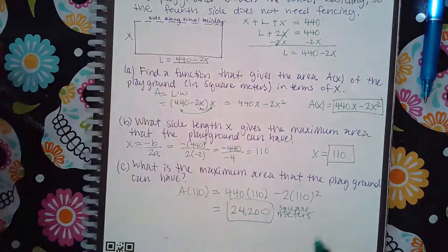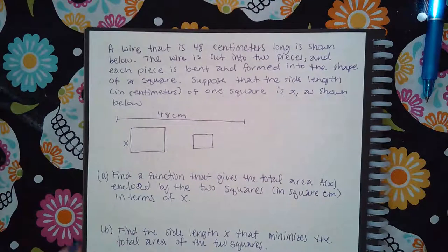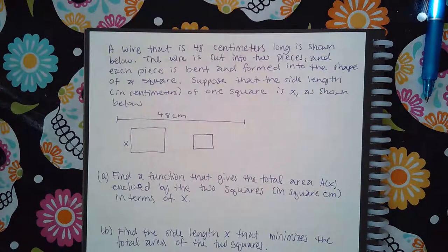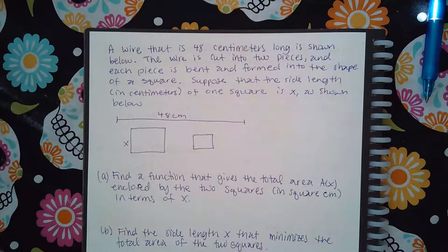The last example is different. A wire that is 48 centimeters long is cut into two pieces, and each piece is bent into the shape of a square. Suppose the side length of one square is x. Find a function that gives the total area enclosed by both squares in terms of x.